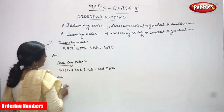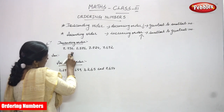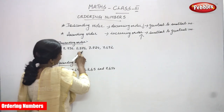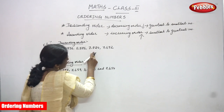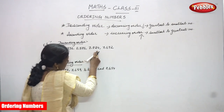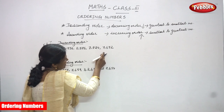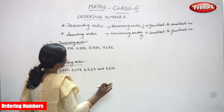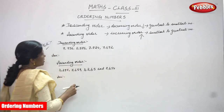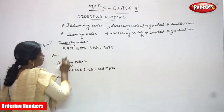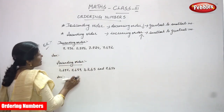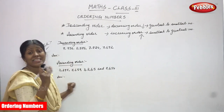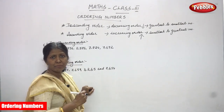Here is a descending order example. The four numbers given are: 7756, 8586, 7824, and 7672. We have to arrange these four numbers in descending order, which means decreasing order — greatest number to smallest number.